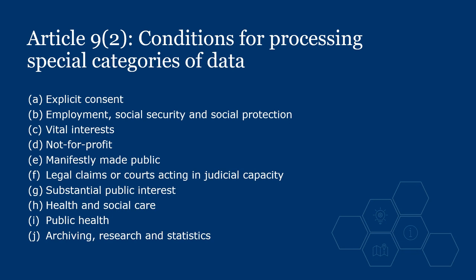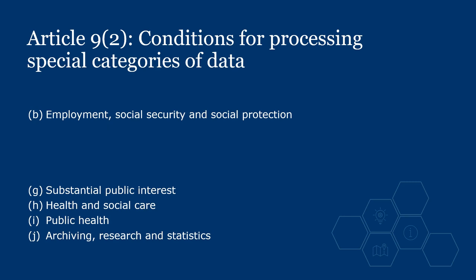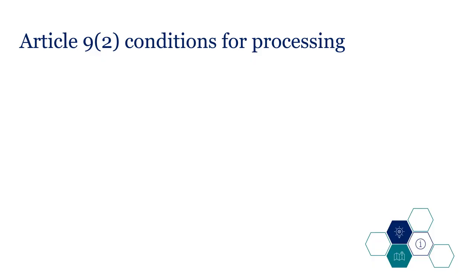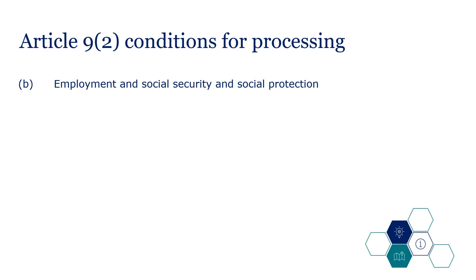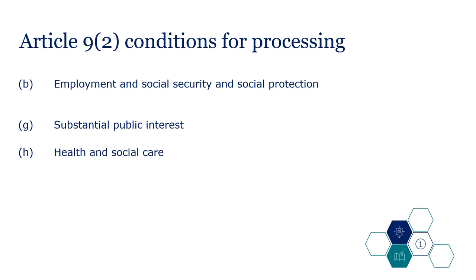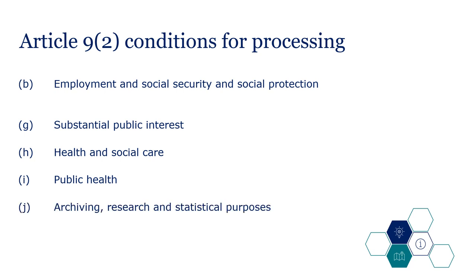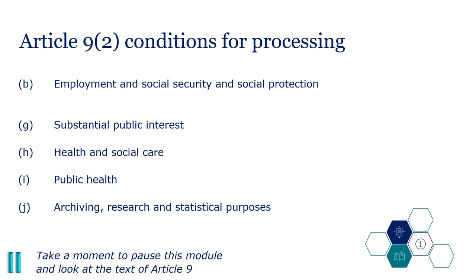We've now looked at five Article 9 conditions for processing — conditions A and C to F. Let's now look at conditions B and G to J, which work in a different way. These five conditions cover processing necessary for: B, employment and social security and social protection; G, substantial public interest; H, health and social care; I, public health; and J, archiving, research and statistical purposes. You could pause this module and look at the text of these five conditions in Article 9.